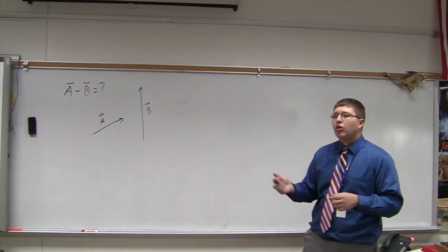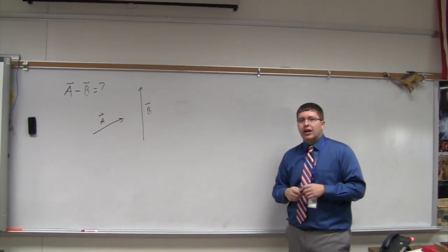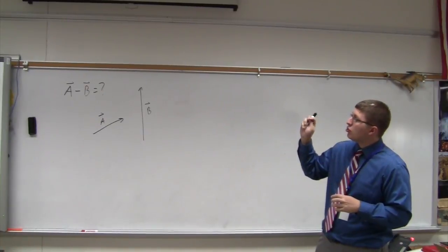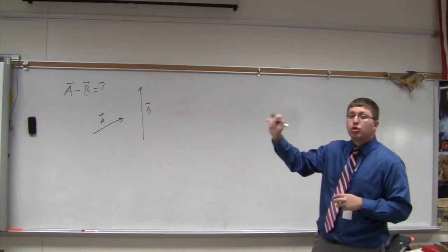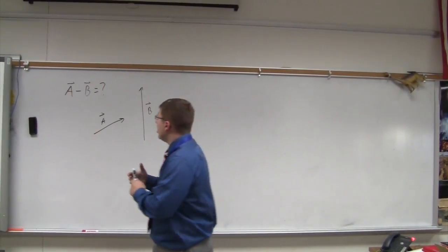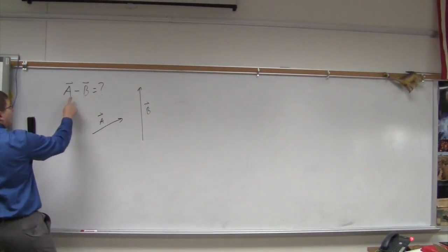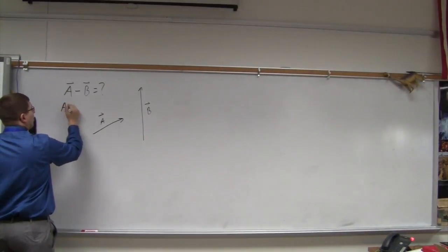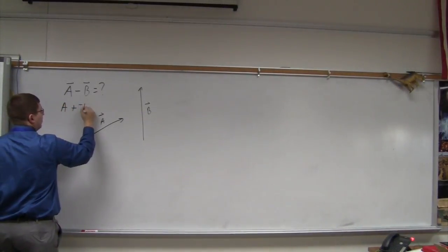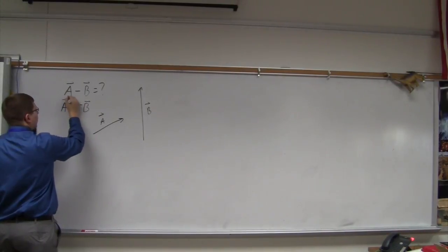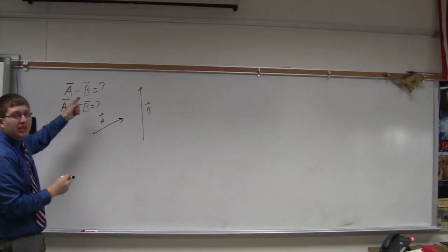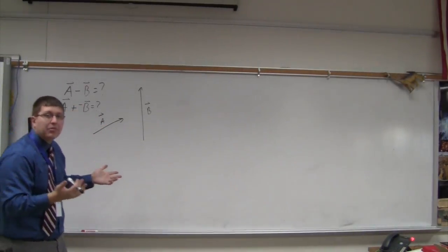We just learned that we could use the head-to-tail method if we were asked to add vectors A and B. So what we're going to do is we're going to go back to the very beginning of algebra class, or pre-algebra class, whenever you learn this. And what we're going to do is we're going to turn that subtraction problem into an addition problem. So instead of A minus B, what we're going to do is we're going to write this down as A plus negative B.